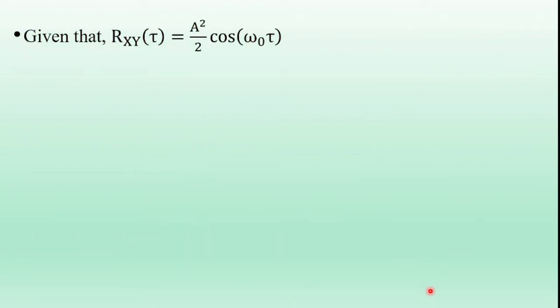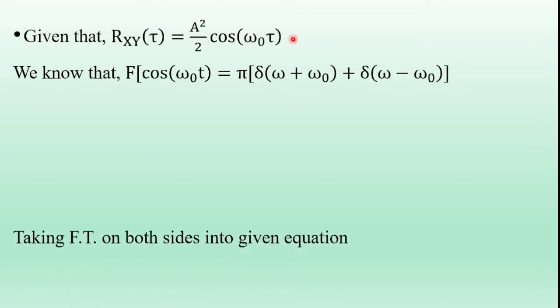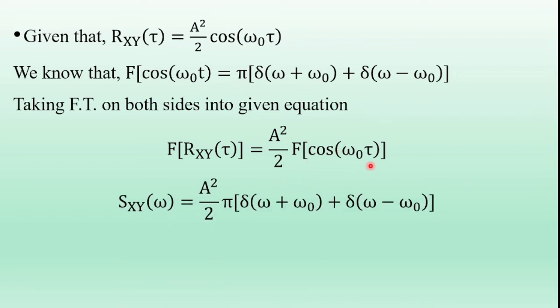Second part solution: given that Rxy of tau is a-squared over 2 times cos of omega-naught tau. We know the Fourier transform of cos(omega-naught tau) is pi times [delta(omega + omega-naught) plus delta(omega minus omega-naught)]. Taking Fourier transform on both sides, Sxy of omega equals a-squared over 2 times pi times [delta(omega + omega-naught) plus delta(omega minus omega-naught)].